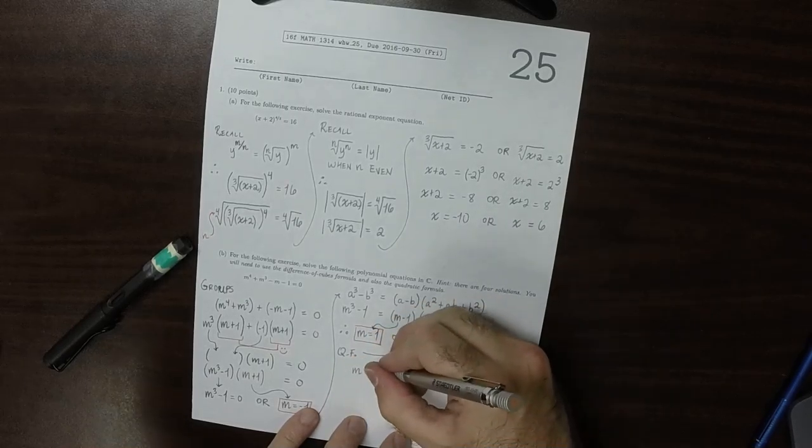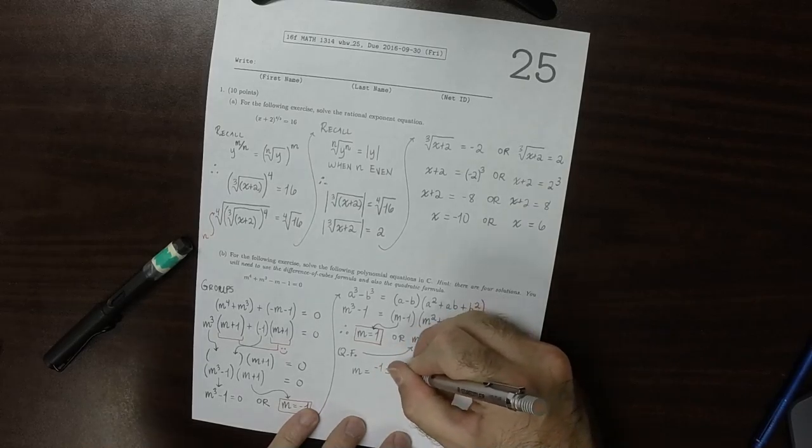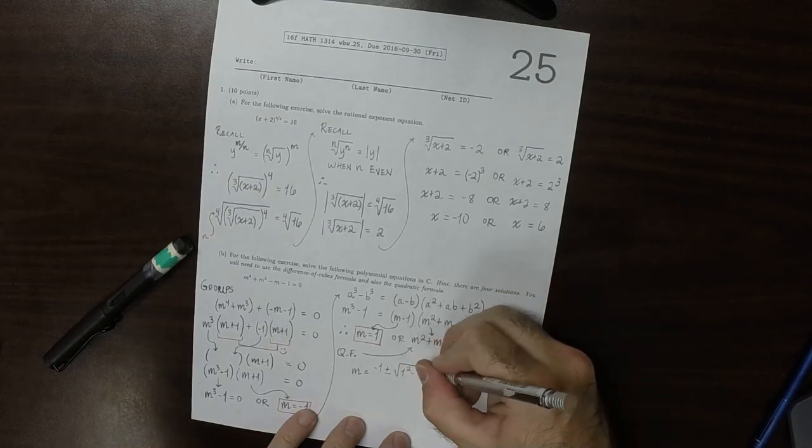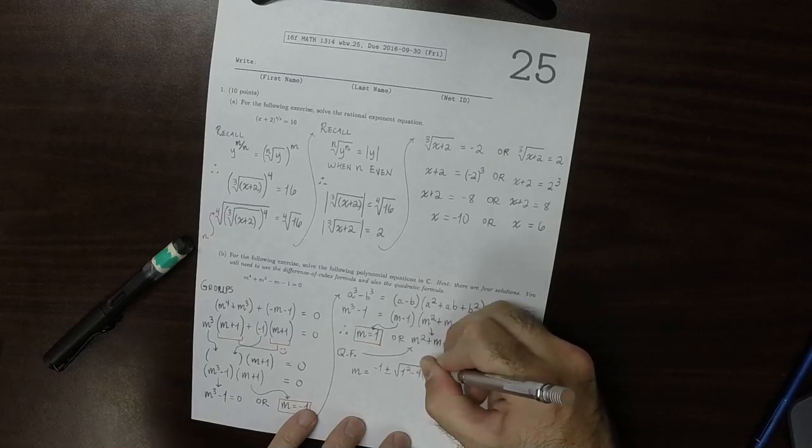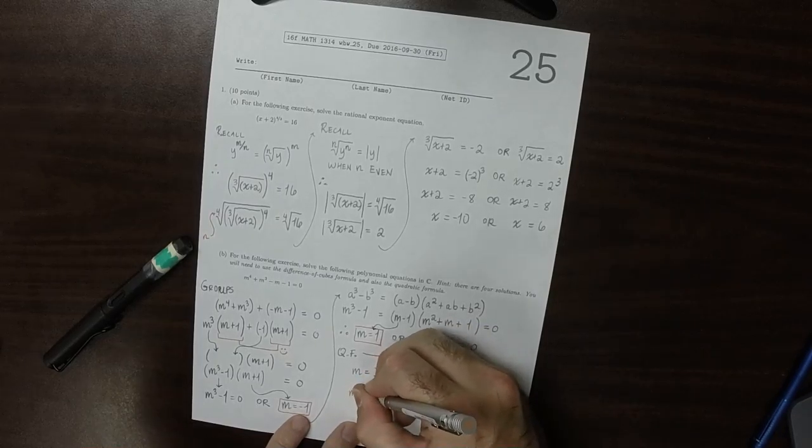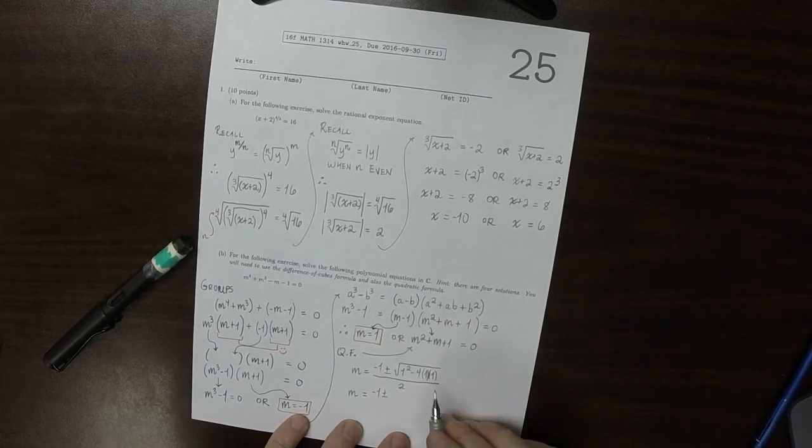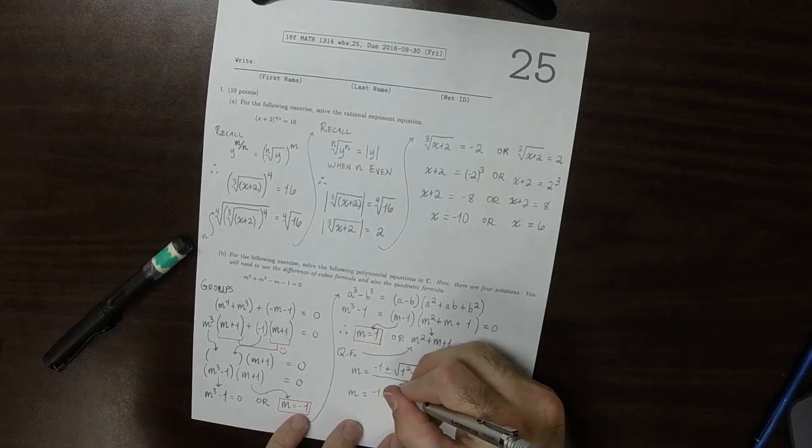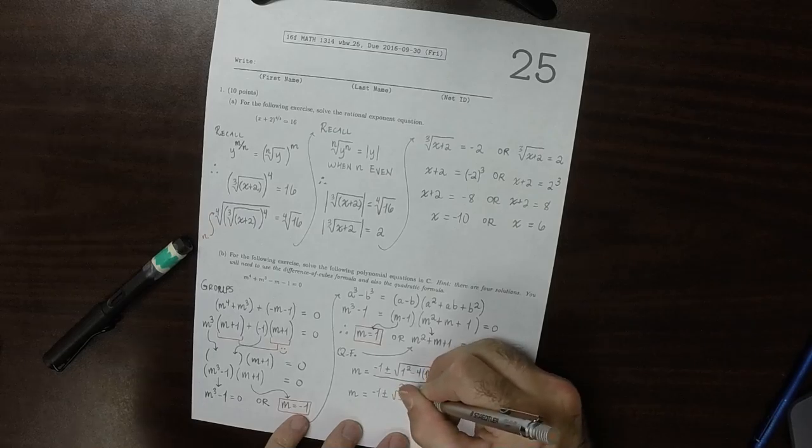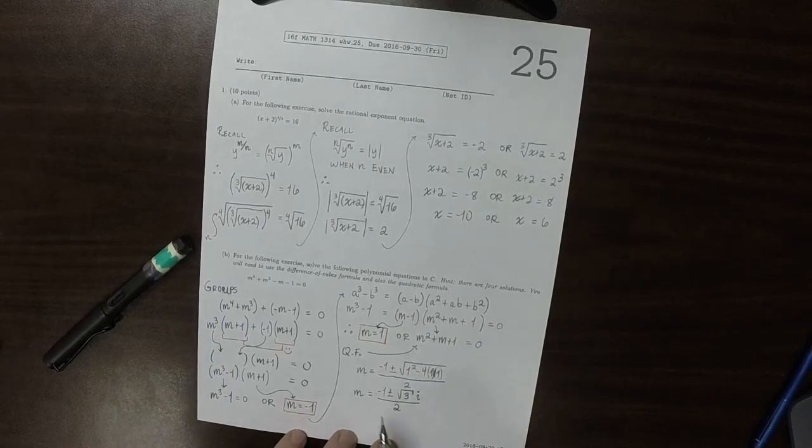So m is negative 1 plus or minus the square root of 1 squared minus 4 times 1 times 1. And then this divided by 2. So m is negative 1 plus or minus, well, 1 minus 1, so m is negative 1 minus 4 is negative 3, and that's under the radical, so that's square root of negative 3. And then I'll factor out the negative as the unit complex, the unit imaginary number, i.